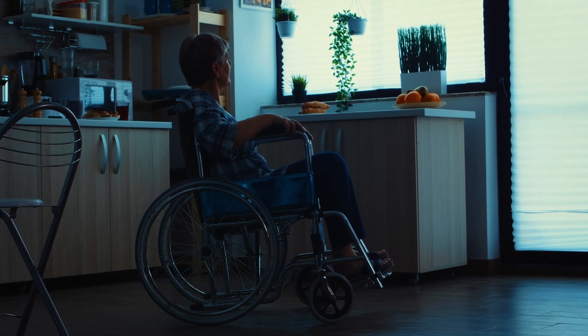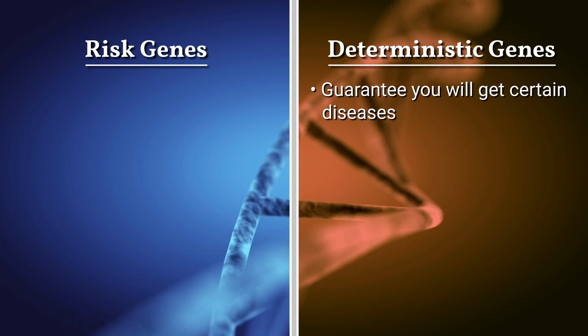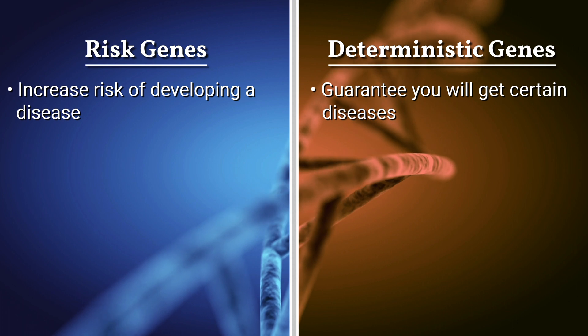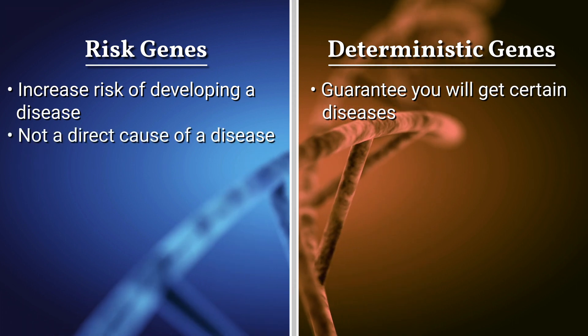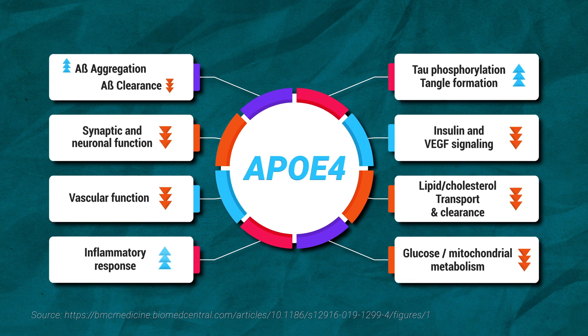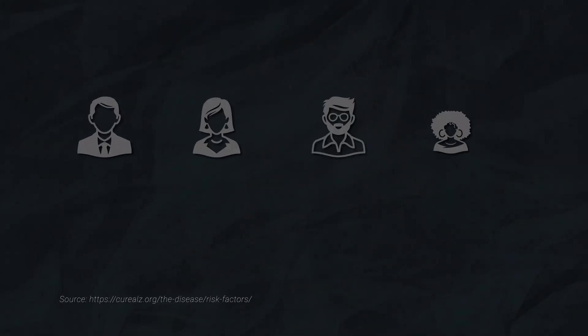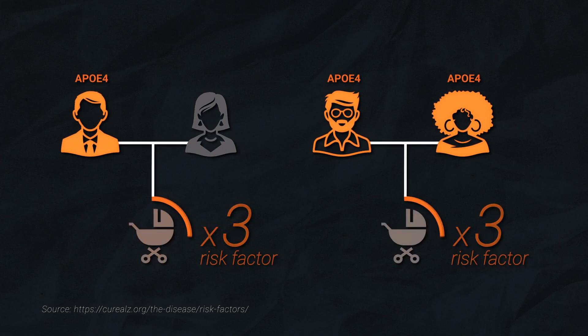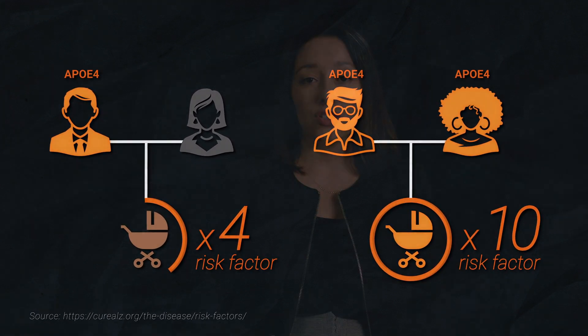While deterministic genes guarantee that you will develop Alzheimer's disease, risk genes are different in that they increase risk of developing the disease but are not a direct cause. The main late-onset genetic risk factor is called apolipoprotein E allele four, or ApoE4, the best known genetic risk factor for late-onset Alzheimer's disease. If you have parents who carry that ApoE4 allele, you might have a higher risk. That risk is also higher if you have a first-degree relative — a parent or sibling — with Alzheimer's.